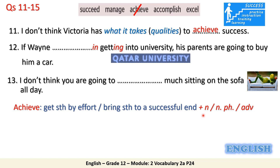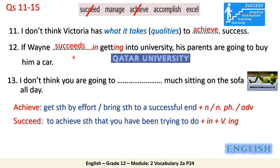We can use a noun after achieve, like 'success', or a noun phrase like 'to achieve much success', or just an adverb like 'much'. Number twelve: if Wayne succeeds in getting into university, his parents are going to buy him a car. This is an if-type 1 conditional — succeed is followed by the preposition 'in' plus the -ing form. Succeed means to achieve something that you have been trying to do.